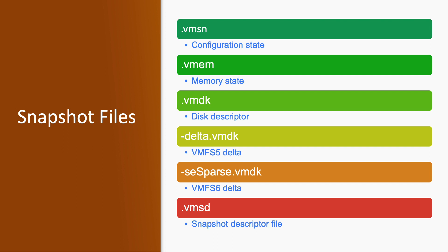Snapshot files: when we take a snapshot, multiple files are created. The .vmsn file is the configuration state of the snapshot. The .vmem file is the memory state of the snapshot, and it is created only when you opt for the virtual machine memory option during the snapshot wizard. The .vmdk file is for the disk descriptor, and delta.vmdk contains the snapshot data — this applies when using VMFS 5. If using VMFS 6, you will have sesparse.vmdk instead. The last file, .vmsd, contains the descriptor file of the snapshot.